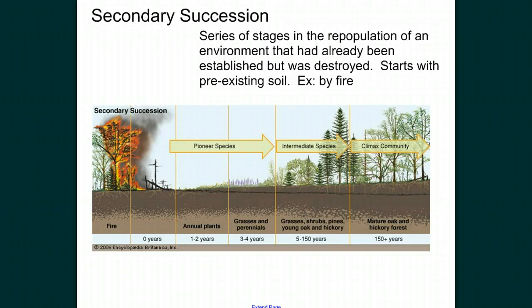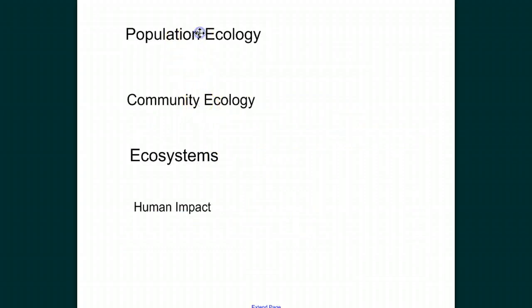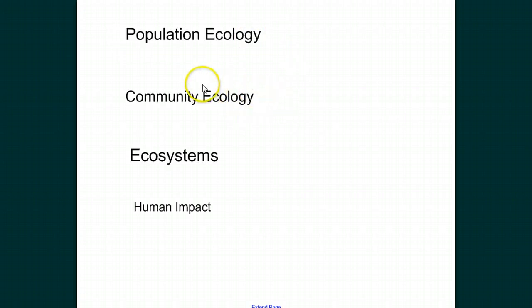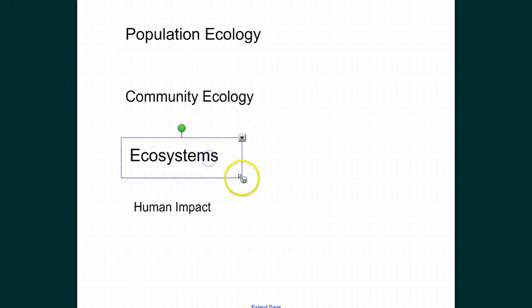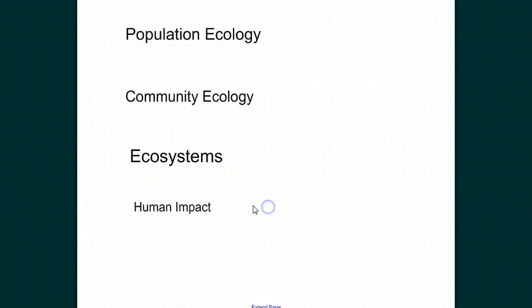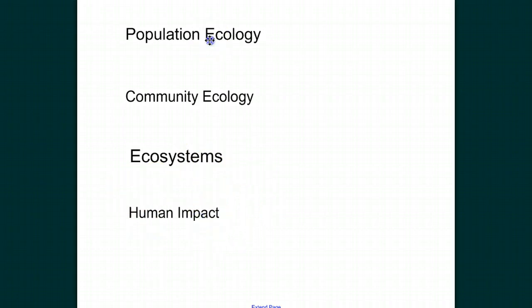That concludes our introduction to ecology. We introduced a lot of terms and will elaborate on a few topics in class. We'll have other videos on ecology focusing on population ecology — how populations grow, disperse, and what affects that growth and distribution. We'll talk about community ecology — interactions between species like predation and competition. Then we'll look at ecosystems, how energy flows through a system and how nutrients cycle. Finally, we'll end with a video on the human impact on the environment. Each topic will probably get its own video in the coming days, so please check back frequently.